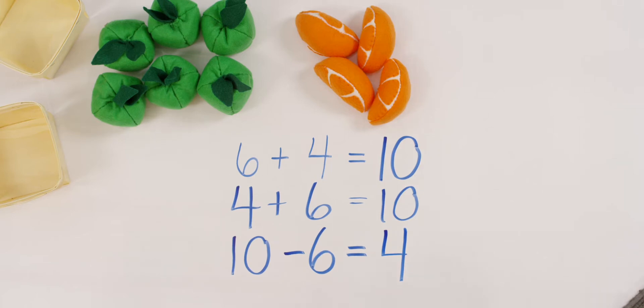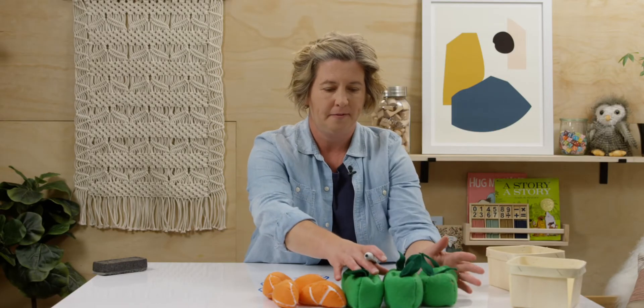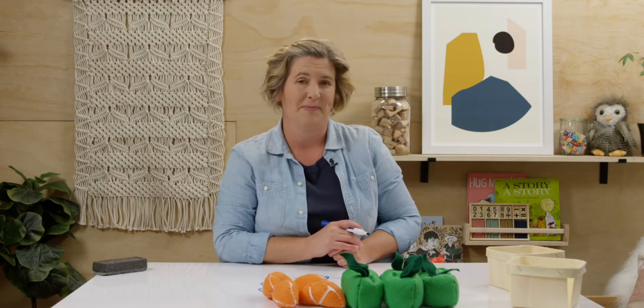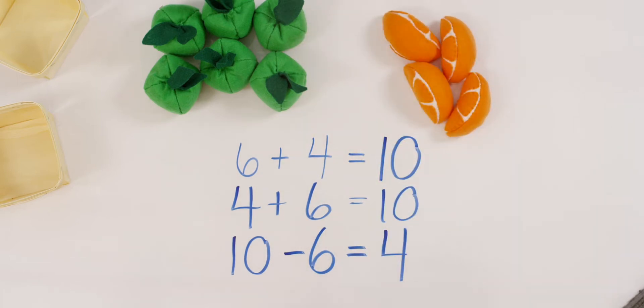Now what's the other subtraction sentence we could write? Let's put everything back. Can you tell your teacher a subtraction story for the other sentence we could write? Here's my story. I still had ten pieces of fruit on the table. My dog jumped up and ate four of the oranges. How much do I still have left on the table? Six.